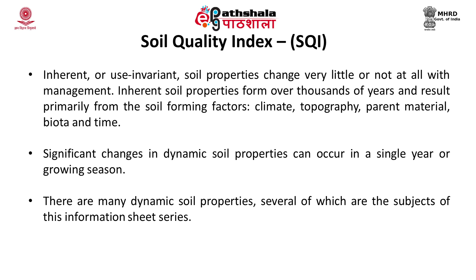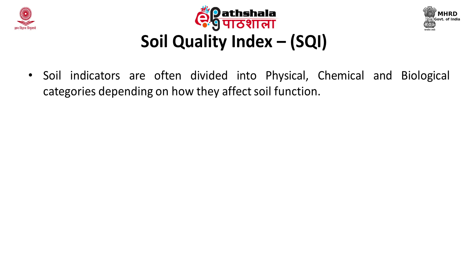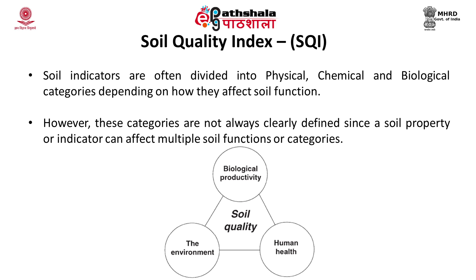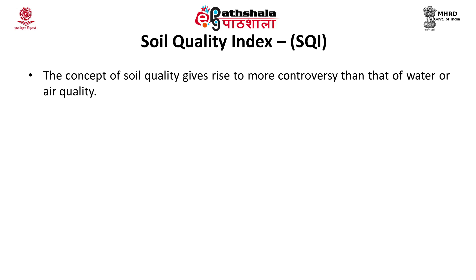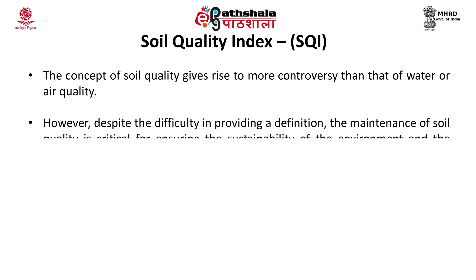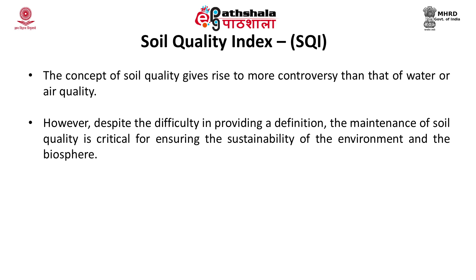There are many dynamic soil properties, several of which are the subject of this information sheet series. Soil indicators are often divided into physical, chemical and biological categories depending on how they affect soil function. However, these categories are not always clearly defined since a soil property or indicator can affect multiple soil functions or categories. The concept of soil quality gives rise to more controversy than that of water or air quality. However, despite the difficulty in providing a definition, the maintenance of soil quality is critical for ensuring the sustainability of the environment and the biosphere.